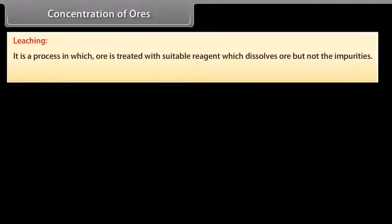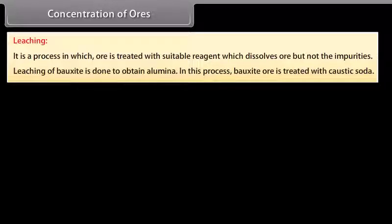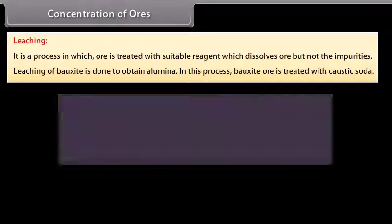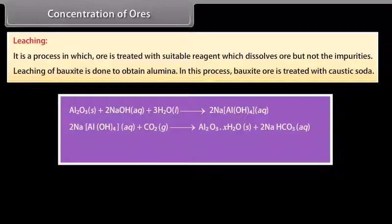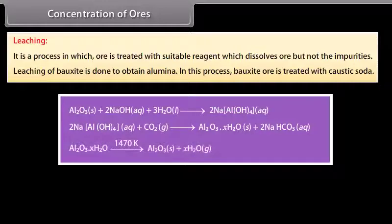Leaching. It is a process in which ore is treated with suitable reagent which dissolves the ore but not the impurities. Leaching of bauxite is done to obtain alumina. In this process, bauxite ore is treated with caustic soda. Al2O3 dissolves in concentrated solution leaving behind impurities. The aluminate in solution is neutralized by passing CO2 gas and hydrated Al2O3 is precipitated. The precipitate of Al(OH)3 is filtered, dried and finally heated to about 1470 Kelvin to obtain pure Al2O3.